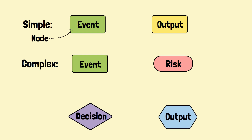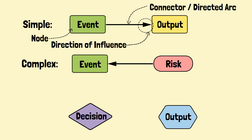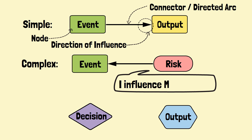Connectors, or arcs, are lines used to connect nodes. They are typically shown with arrowheads to depict the direction of influence. For example, as the risk node connects with an arrow pointing to the event node, this means the risk influences the event.